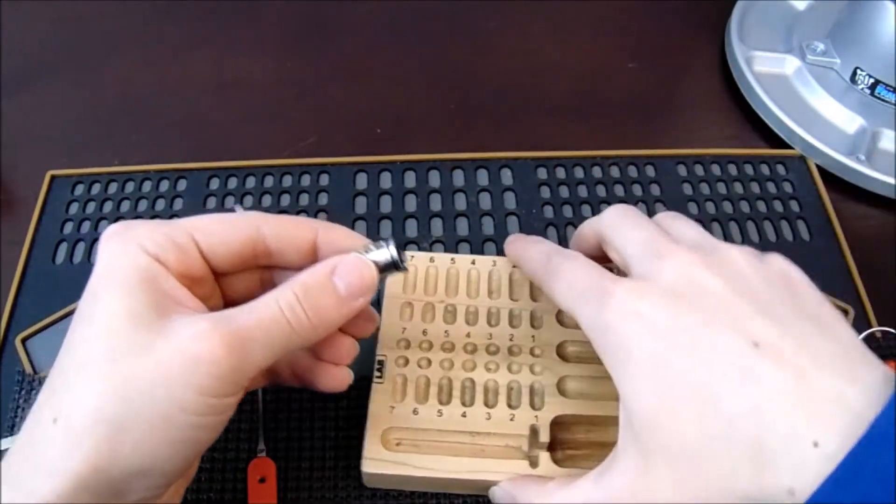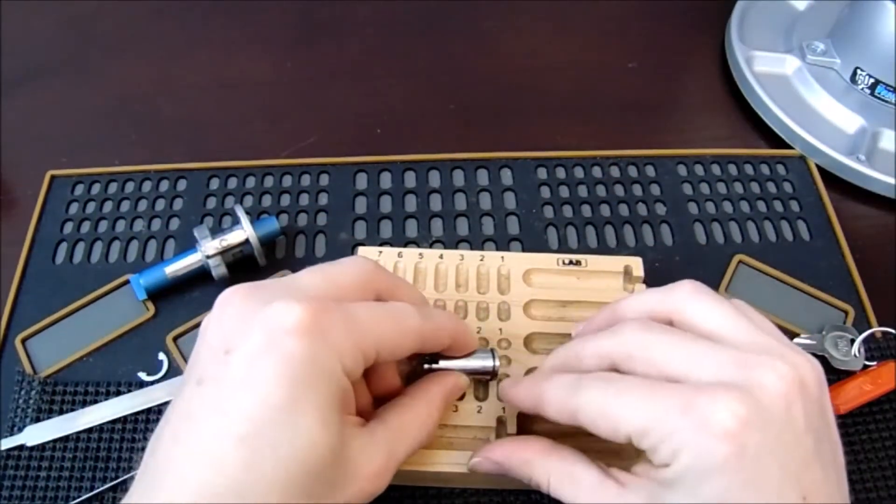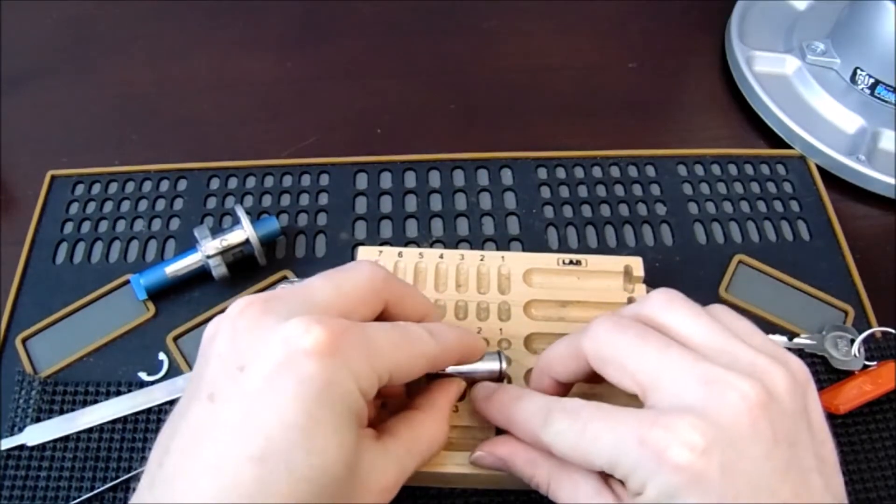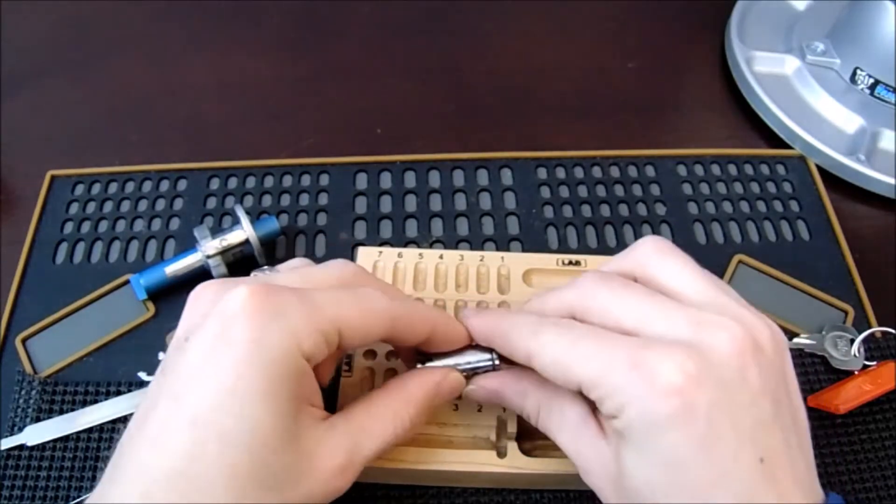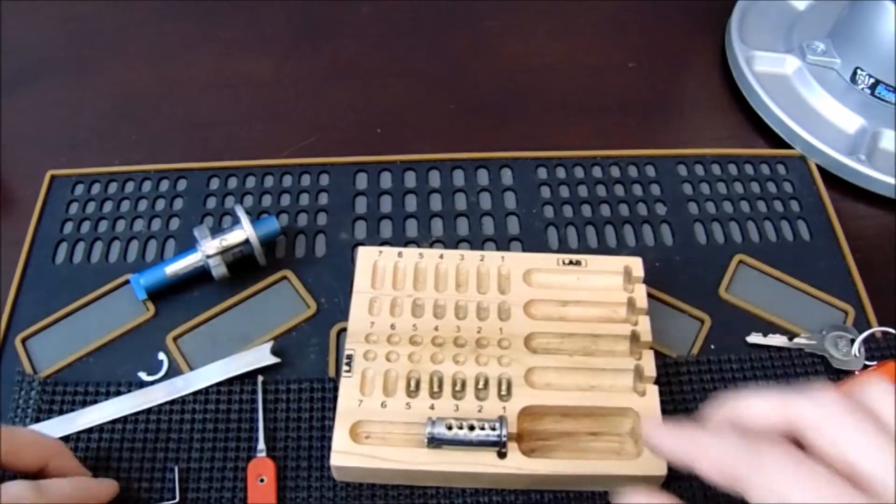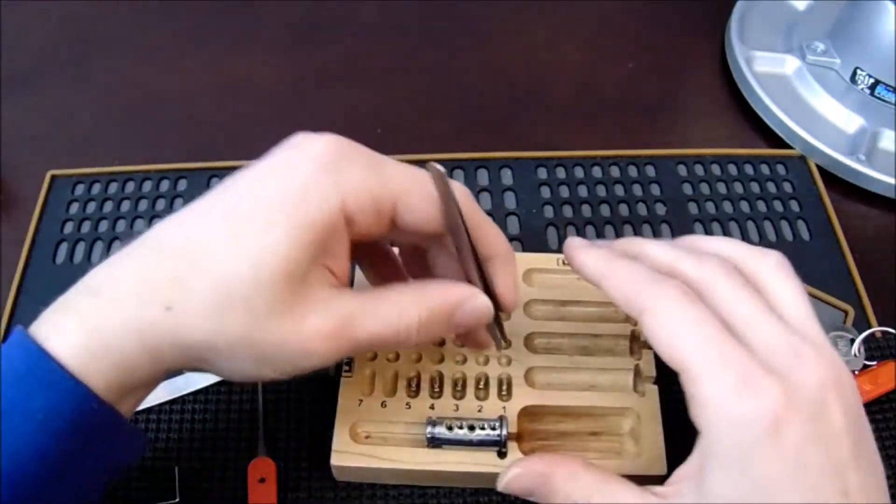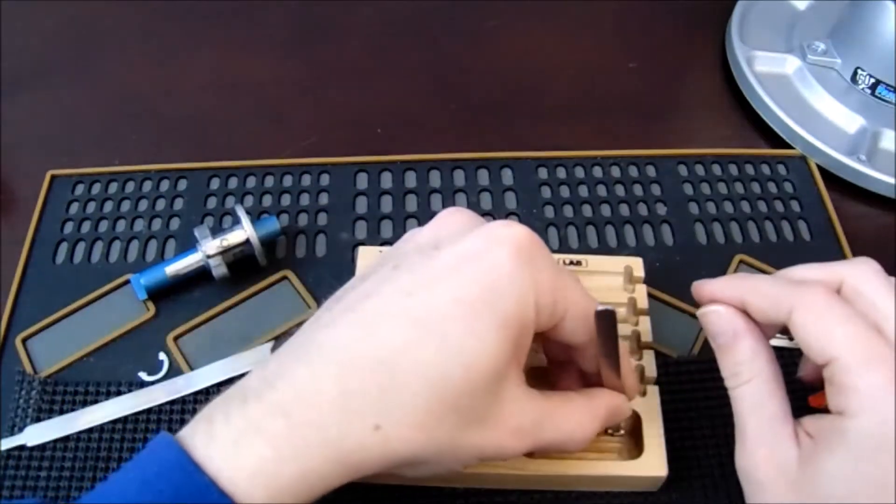For the key pins, got key pin one, two, three, four, five. They all look like they have a little spool kind of serration thing at the top so that they can get overset pretty easily.